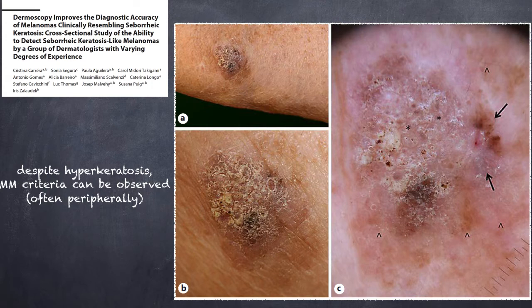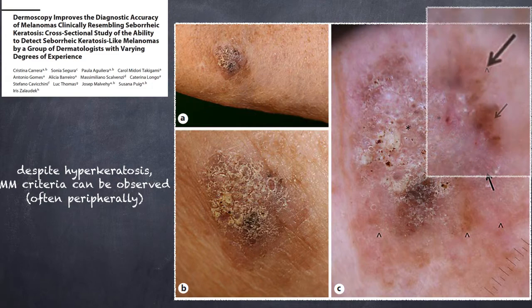Here is another example of a melanoma resembling a seborrheic keratosis: clinically there is a lot of hyperkeratosis, but with the dermatoscope we observe at the periphery the presence of tiny globules and pigmentation that are definitive clues for a melanoma diagnosis. So when you have a hyperkeratotic lesion, use your dermatoscope and check for melanoma-specific criteria — not in the hyperkeratotic area but in the flatter peripheral area of the lesion.